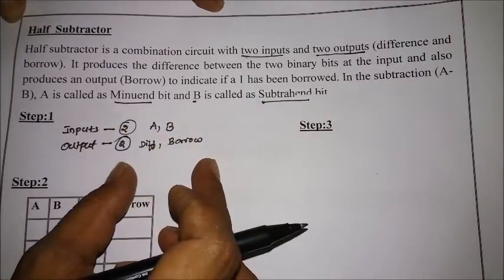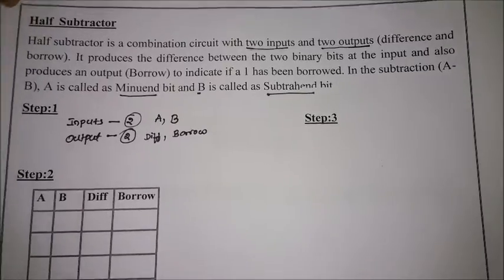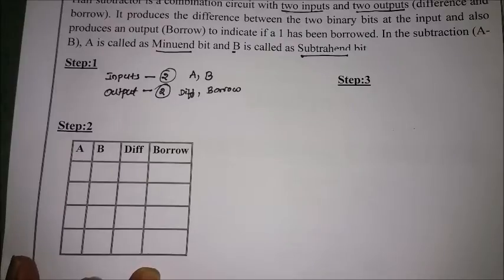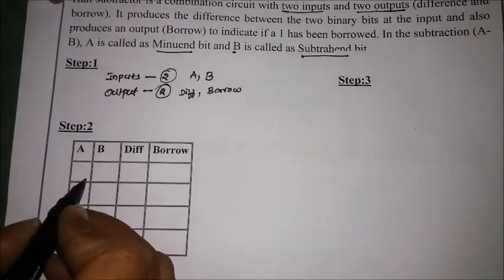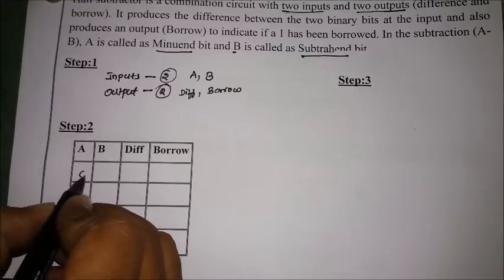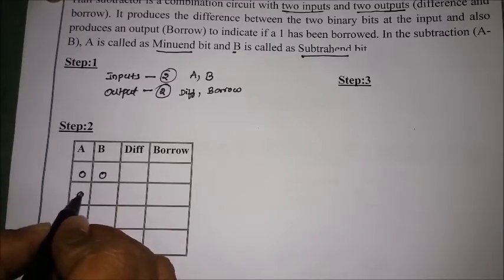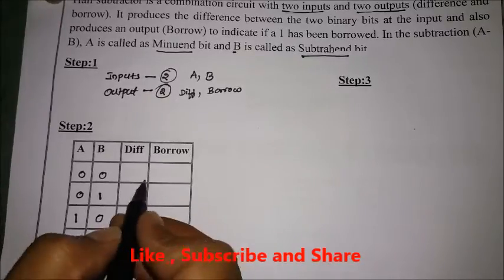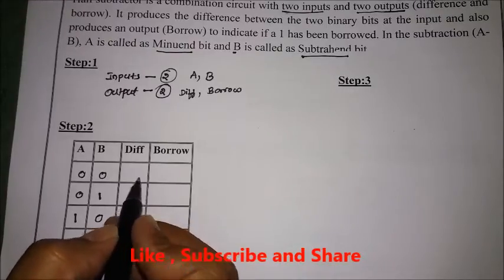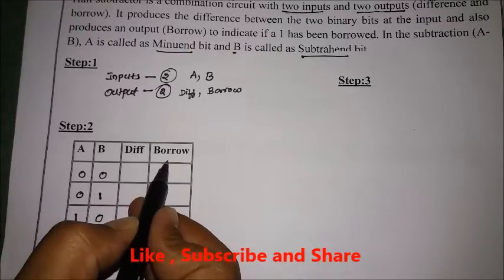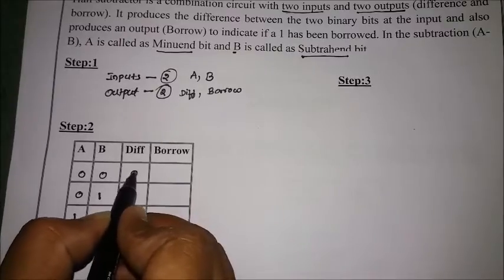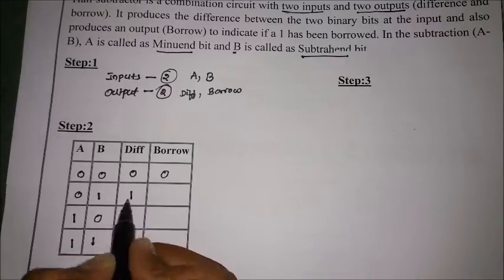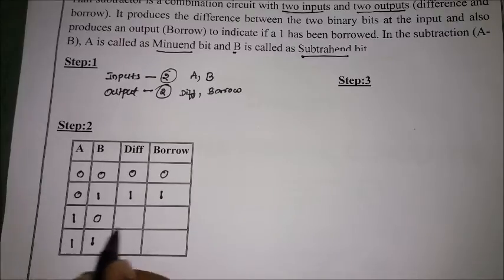Now proceeding to step two, we derive the truth table based on the two inputs. The four input combinations are: 0,0 — 0,1 — 1,0 — and 1,1. The outputs are difference and borrow. So: 0 minus 0 gives difference 0 and borrow 0; 0 minus 1 gives difference 1 and borrow 1; 1 minus 0 gives difference 1 and borrow 0; 1 minus 1 gives difference 0 and borrow 0.